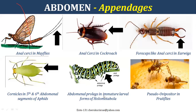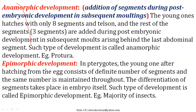In larvae, you can also see legs on abdominal segments — these are called false legs (prolegs). True jointed legs are always in the thoracic segments of larvae as well. There are also cornicle-like structures on the fifth and sixth abdominal segments of aphids. Regarding development, it can be anamorphic or epimorphic. In some insects, segments keep being added later on (anamorphic), but in the majority of insects it is epimorphic development — once the adult is developed, there is absolutely no addition of segments.